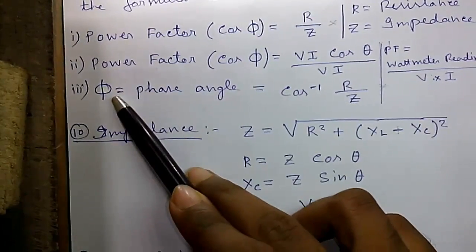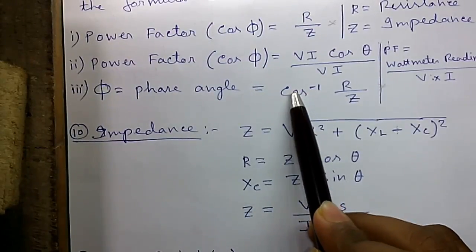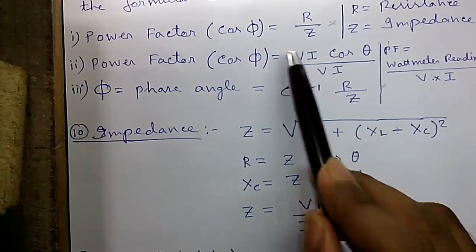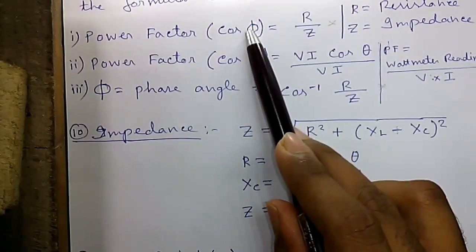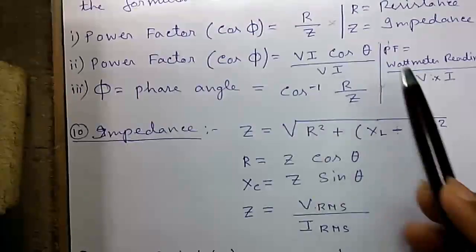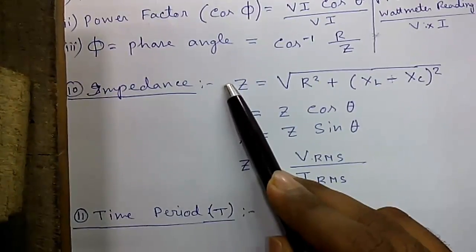Formula number 4, phi equals phase angle equals cos inverse R by Z. From here, cos theta equals R by Z. So theta equals cos inverse of R by Z.